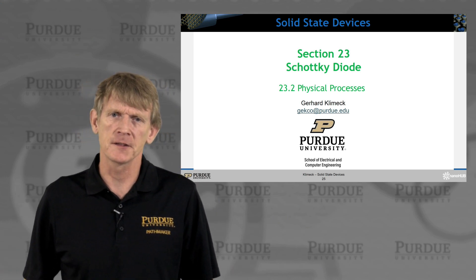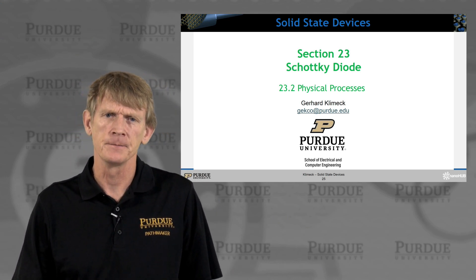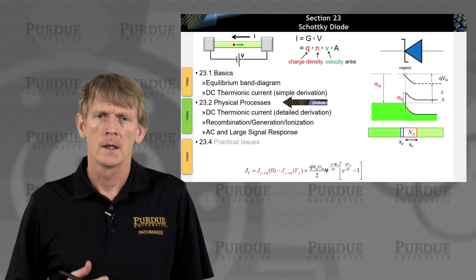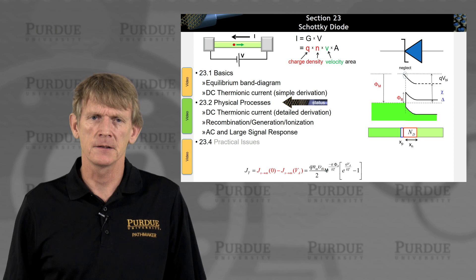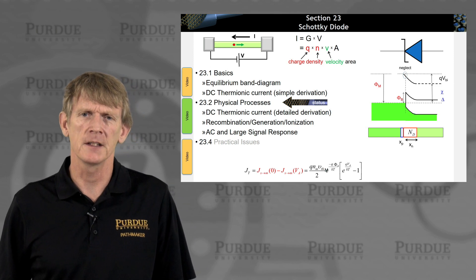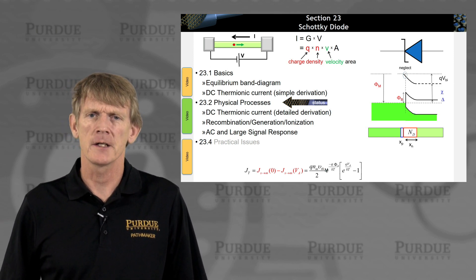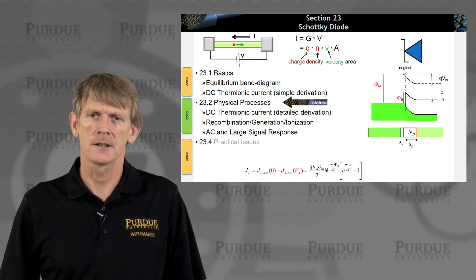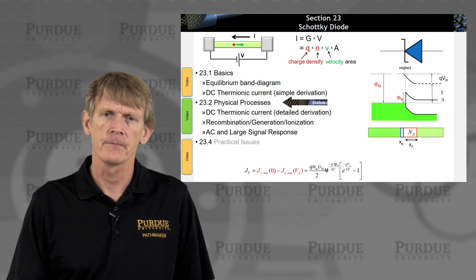Let's talk about the physical process in a Schottky diode. We're looking at the DC thermionic current and deriving it in more detail, and looking at recombination, generation, and ionization in the device, and then at some AC and large signal response. So that's the aim for this section.